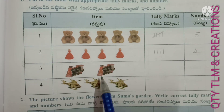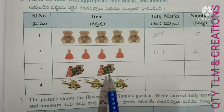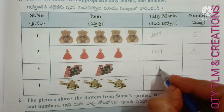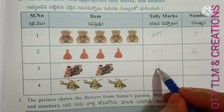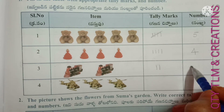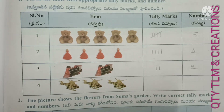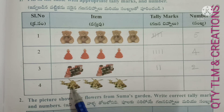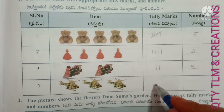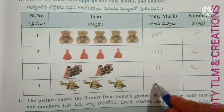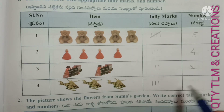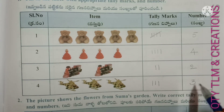Next, how many train toys are there? 1, 2. Tally marks are 1, 2. Number is 2. Next, how many helicopters are there? 1, 2, 3. So we can write tally marks 1, 2, 3. Number is 3. There are 3 helicopters.